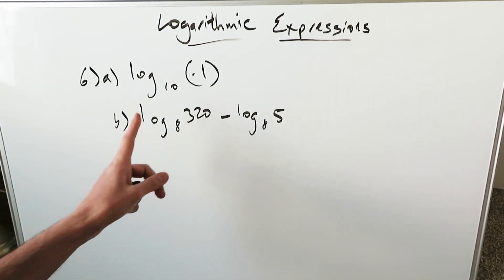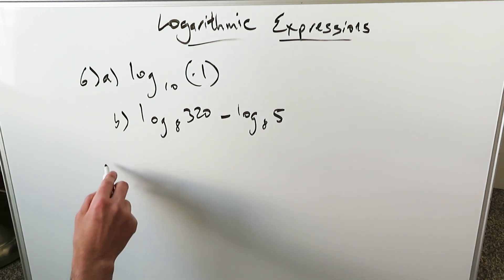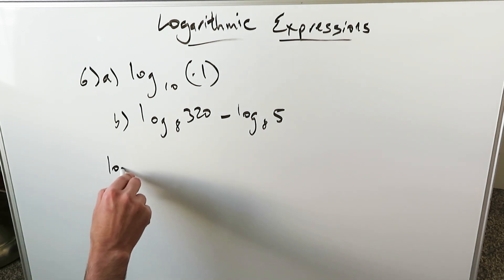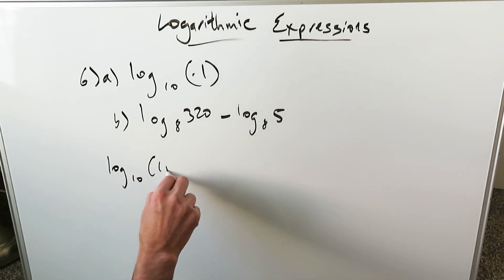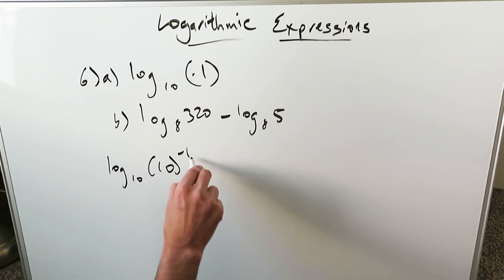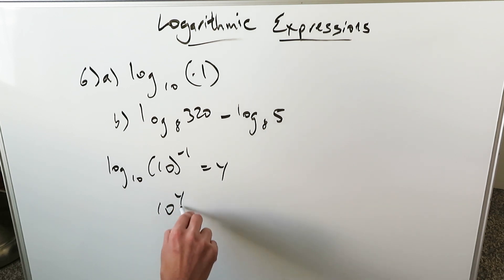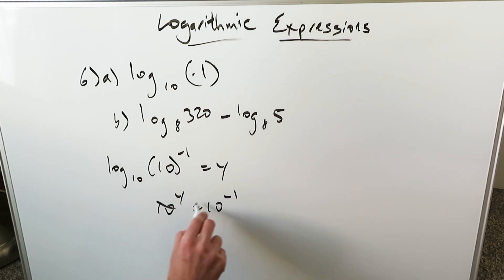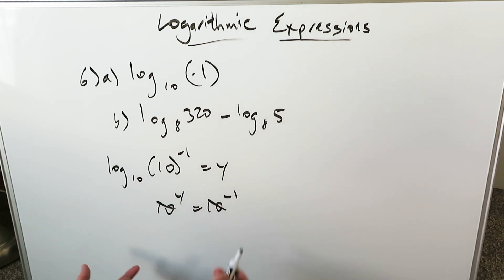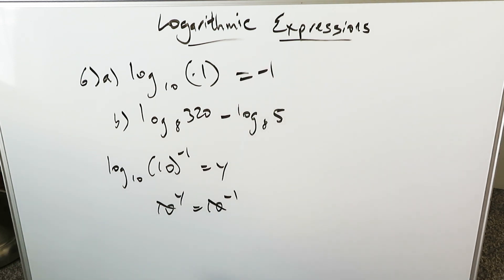Question 6A: log base 10 of 0.1. Since 0.1 is 10 to the minus 1, log base 10 of 10 to the minus 1 equals Y. So 10 to the Y equals 10 to the minus 1 — cancel these out — it's equal to minus 1.